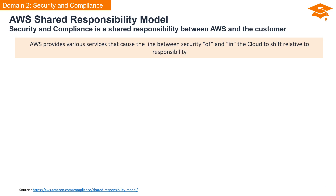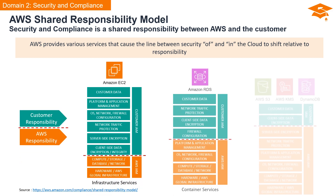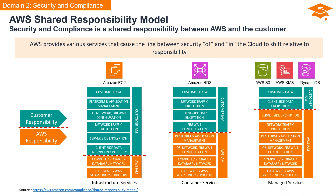AWS offers a diverse array of services, spanning from infrastructure to managed services. Your role and that of AWS evolve based on the specific services you choose. In infrastructure services, exemplified by Amazon EC2, AWS oversees the foundational infrastructure. Customers focus on elements atop this infrastructure, covering server and client data encryption, network traffic protection, disk operating system, application, and data. Transitioning to container services like Amazon RDS, AWS shoulders the system management; however, customers retain control over their data and access. For managed services, AWS assumes a greater share of responsibility, leaving customers in charge of managing their data and encryption. In essence, the balance of responsibility in AWS is dynamic and aligns with the unique characteristics of each selected service.